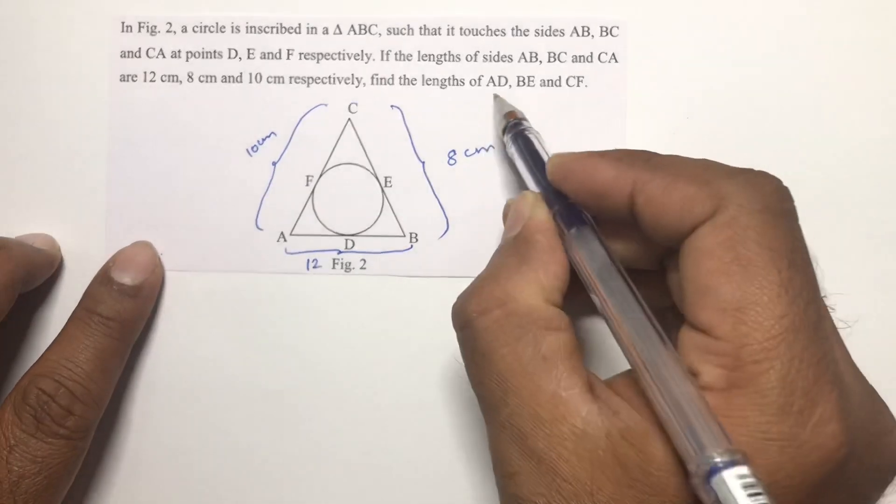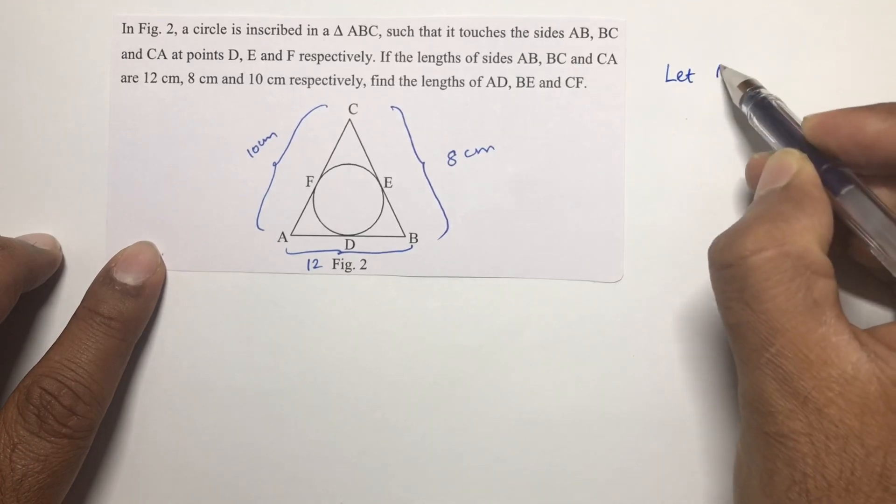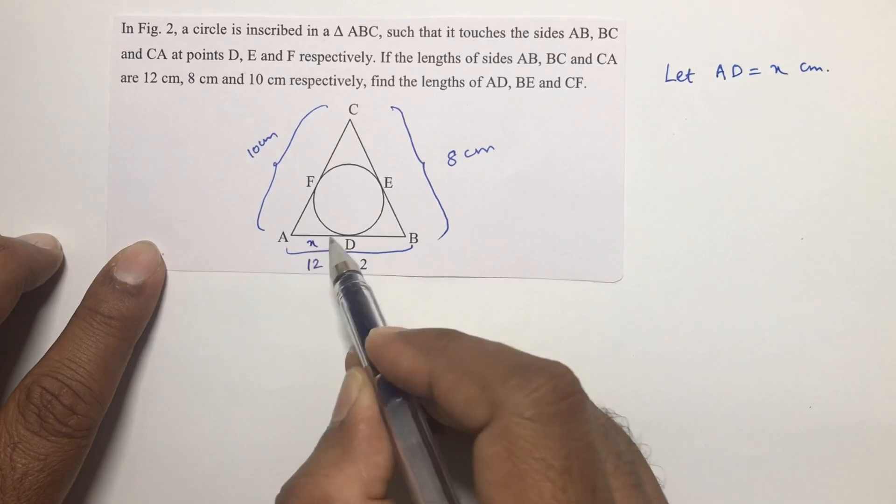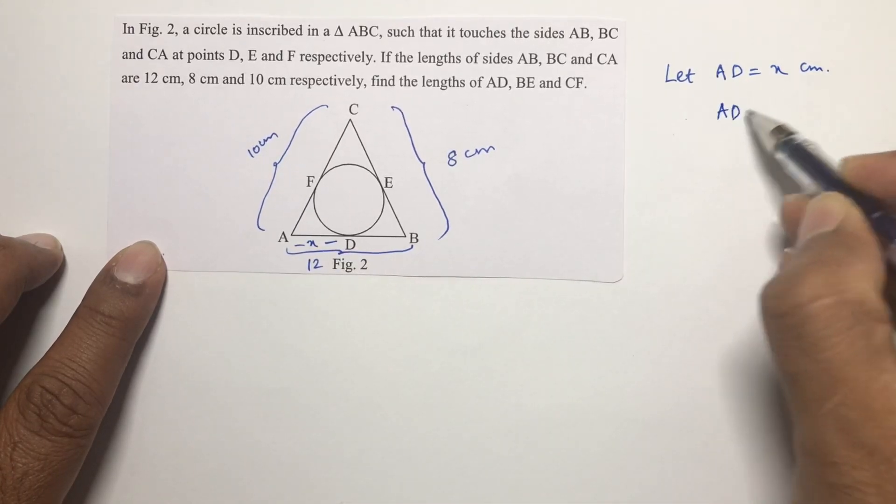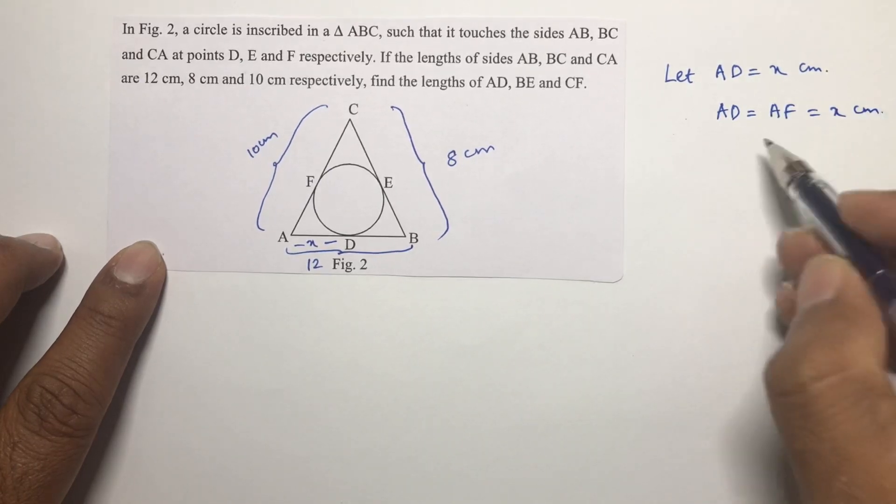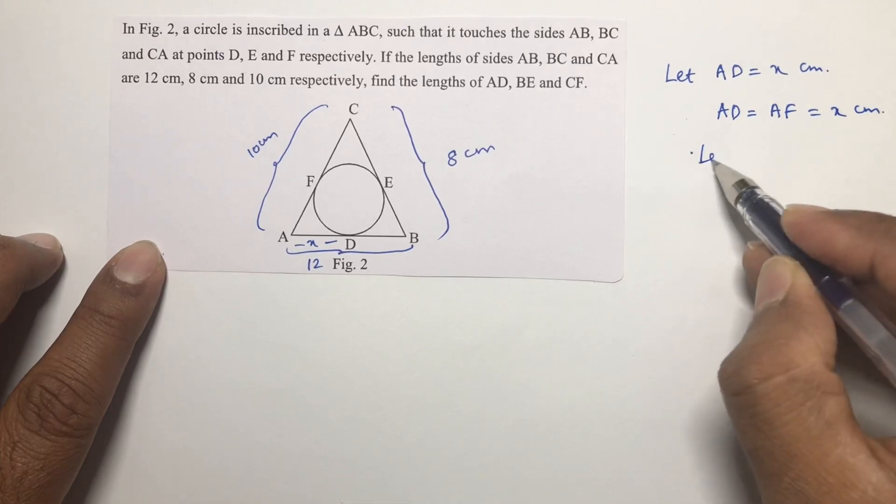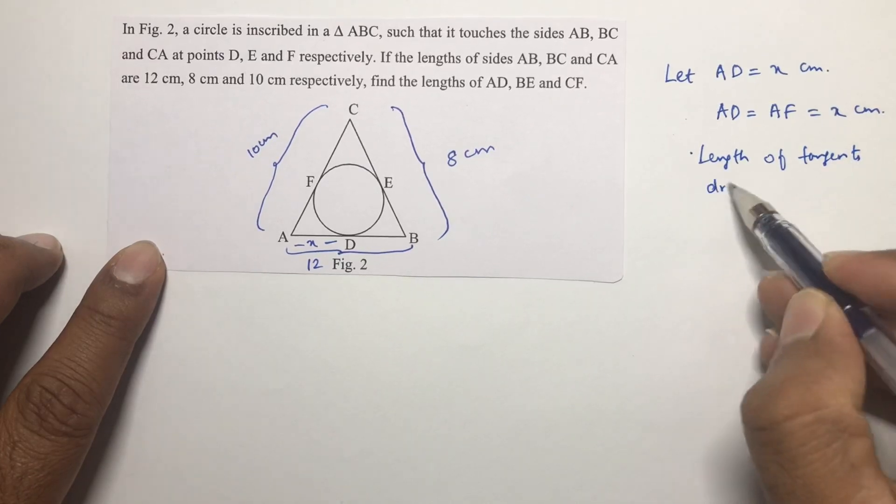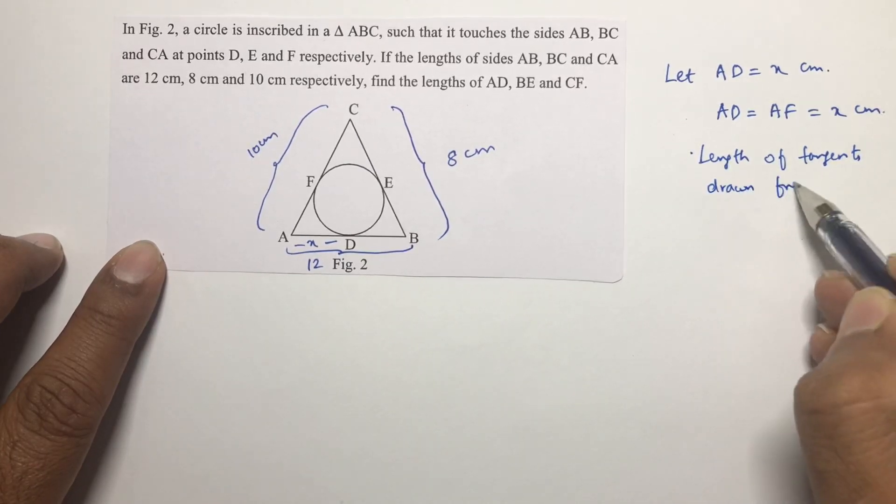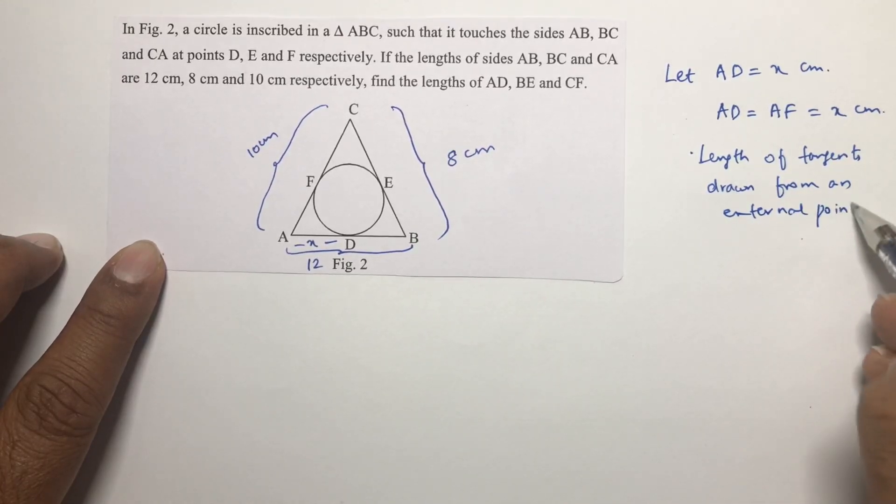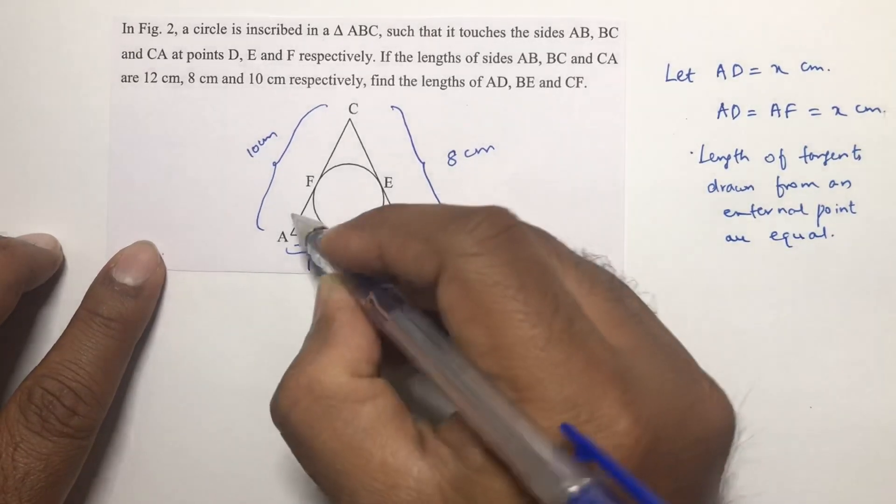Now as I need to find AD, let us consider let AD equals x centimeters. If AD is x, then AD equals AF because this also will be x centimeters.